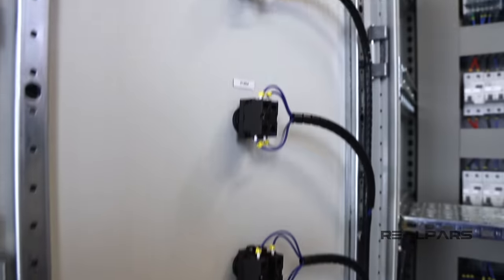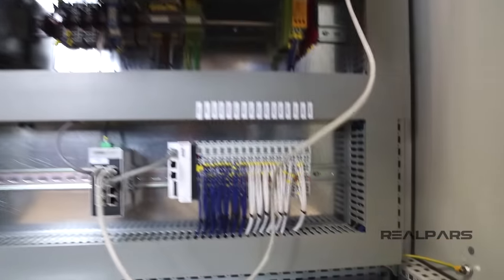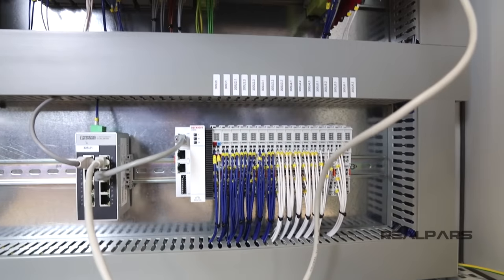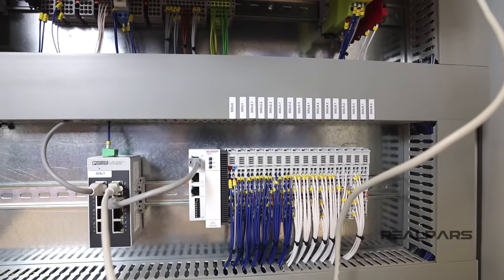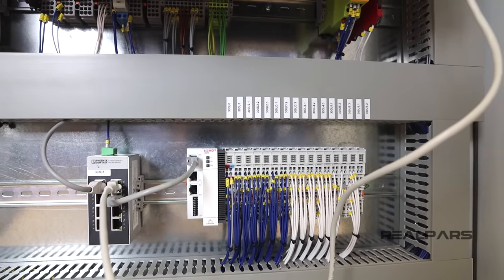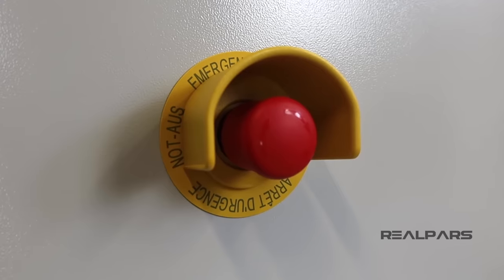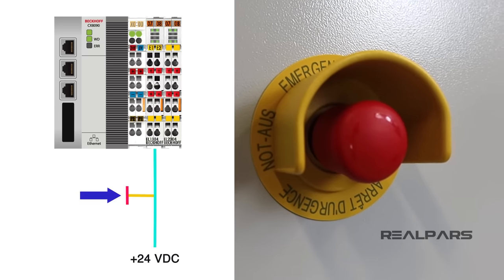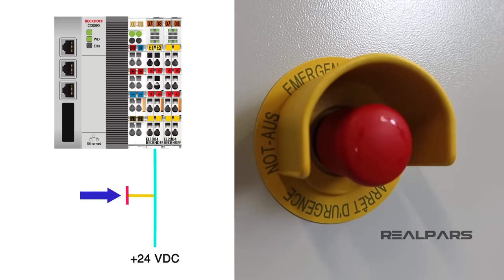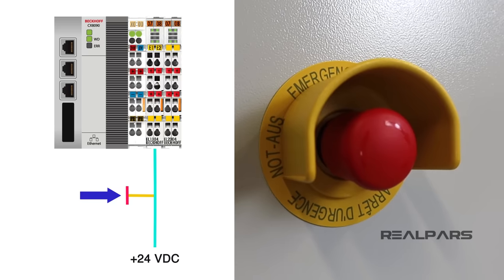Of course, we only have these switches on the panel door connected to the PLC and the rest of the sensors and actuators will be connected to the PLC once we install this control panel in the field. The emergency stop that we have on the door is connected to the PLC digital input card as it only sends an on and off signal to the PLC input.